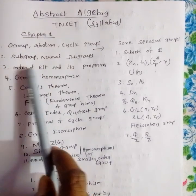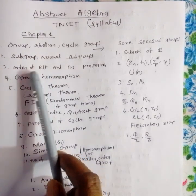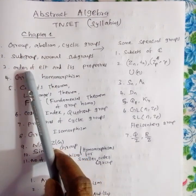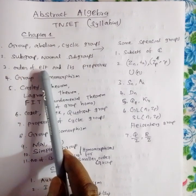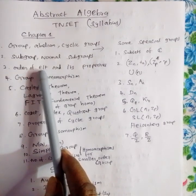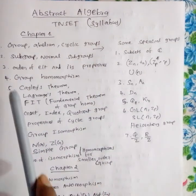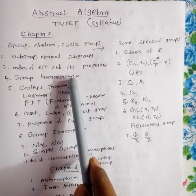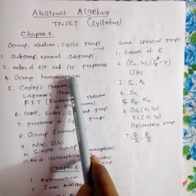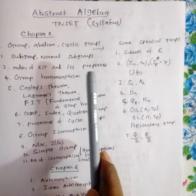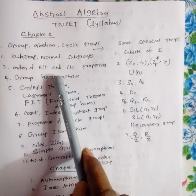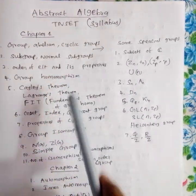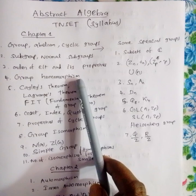The order of an element is very important. Given two groups, we can define a homomorphism. The homomorphism is an order-preserving map.